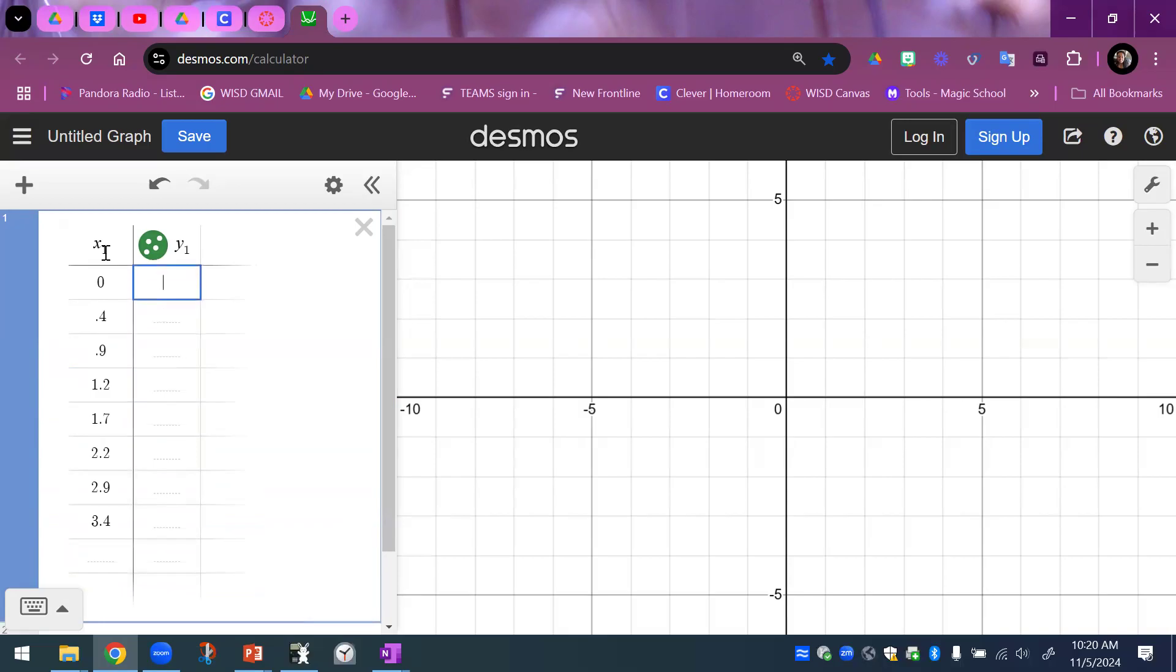My y values are 4, 5, and then we have 10 and 6 tenths, 15 and 4 tenths, 17 and 1 tenths, 18, 16 and a half, 10 and 2 tenths, and 2 and 8 tenths.